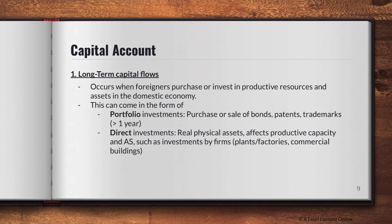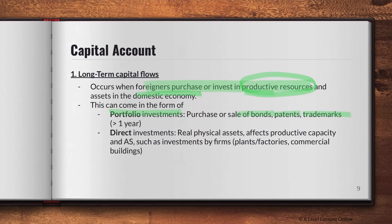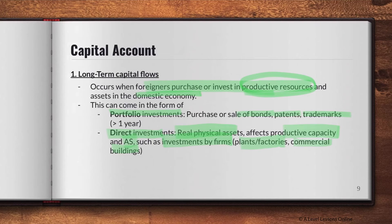Long-term capital flows occur when foreigners purchase or invest in productive resources and assets in a domestic economy. These can come in the form of portfolio investments — such as purchasing or selling bonds, patents, trademarks, stocks, or shares held for more than a year. They can also come as direct investments — real physical assets that affect productive capacity, such as plants, factories, commercial buildings, and vehicles invested for the long run.